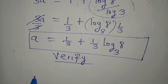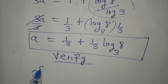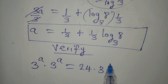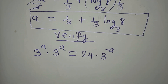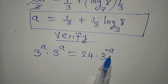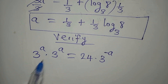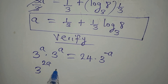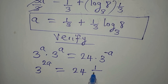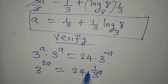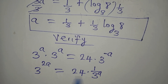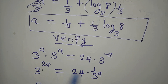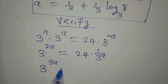Now we have to verify our answer. The original equation is 3 to the power of a multiplied by 3 to the power of a equals 24 multiplied by 3 to the power of negative a. From our working, we brought it to 3 to the power of 3a from here, which equals 24. On the other side, we have 24 multiplied by 1 over 3 to the power of a. If you cross-multiply, this gives us 3 to the power of 3a, equal to 24.